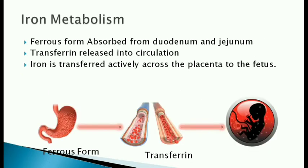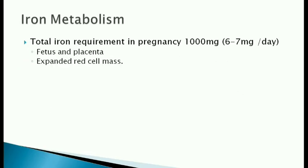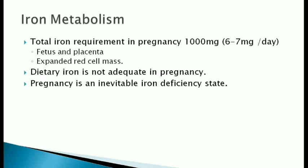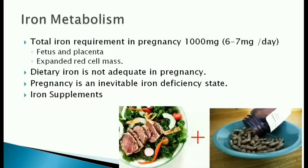Iron is absorbed in ferrous form, released into circulation as transferrin, and actively transported across the placenta to the fetus. The demand of iron in pregnancy is highly increased. The total iron requirement in pregnancy is 1000 mg, almost 6-7 mg per day. This is used up by the fetus and placenta and the increased maternal RBC mass. The amount of iron in diet is not sufficient to meet this need. Thus, pregnancy is an inevitable iron deficiency state, and every pregnant woman needs iron supplements besides the dietary intake.